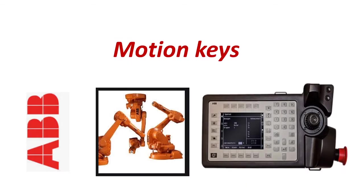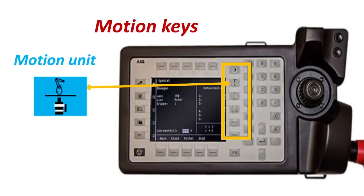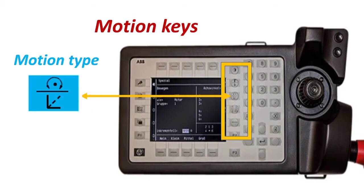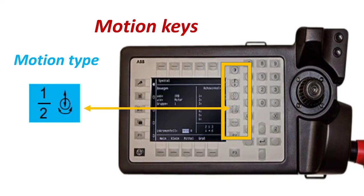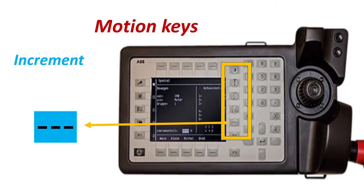Our next topic is Motion Keys. Motion Unit: press this key to jog the robot or other mechanical units. Motion Type: press this key to select how the robot should be jogged — reorient or linear. Another Motion Type: press this key to access axis-by-axis movement. Increment: press this key to toggle incremental jogging on and off.